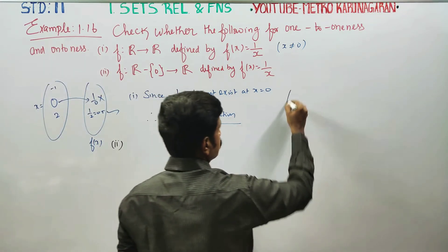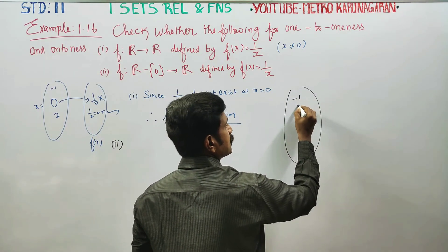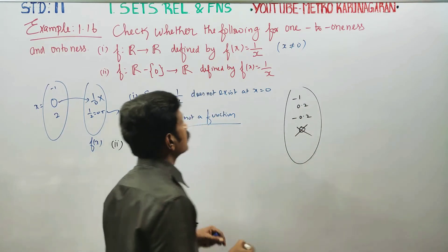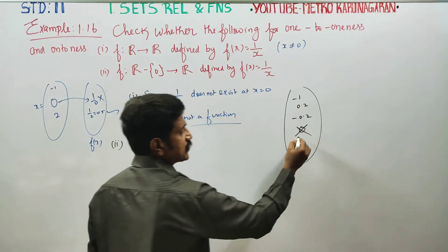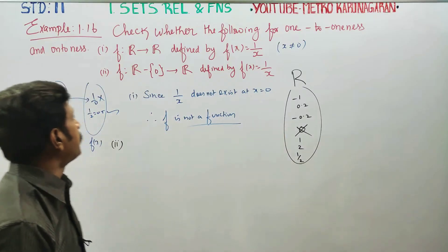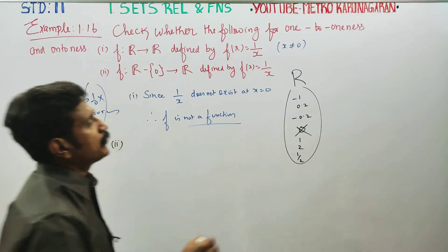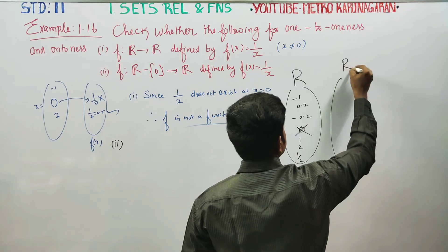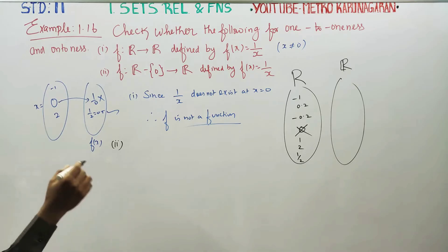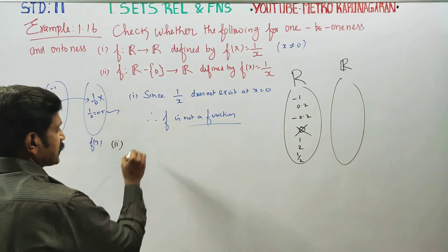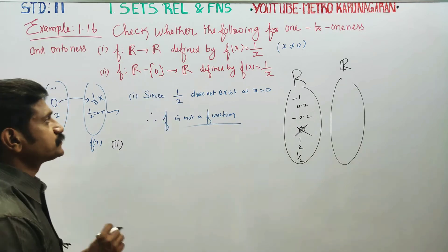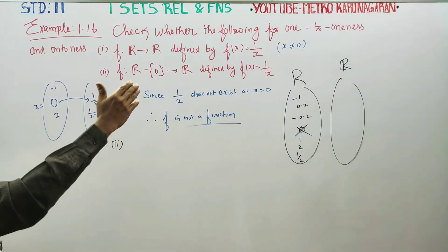For the second case, the domain excludes zero — it includes negative numbers, decimal numbers, positive numbers, and fractions, but not zero. So the function f, excluding zero, is defined by f(x) = 1/x, mapping real numbers excluding zero to real numbers.